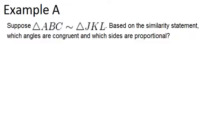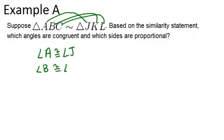So remember, if two shapes are similar, that means all their corresponding angles are congruent. So from the similarity statement, we can tell that angle A matches with angle J, B with K, and C with L. So what that means is that angle A must be congruent to angle J, angle B is congruent to angle K, and angle C is congruent to angle L.